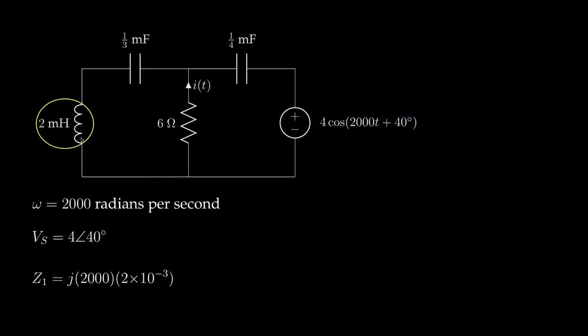The impedance for the inductor is then determined as the product of J times the radian frequency, 2,000, times the inductance, which is 2 times 10 to the negative third. Now, because this one-third millifarad capacitor is in series with the inductor, and because we aren't trying to determine the voltage across either of these elements individually, for this analysis, we can combine these two elements into a single impedance by summing their individual impedances.